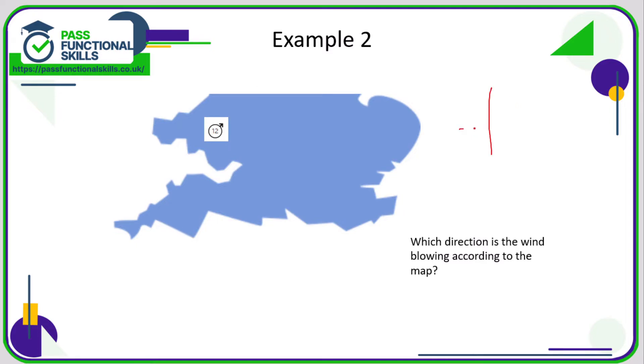Let's just think of our compass. We've got never eat shredded wheat or naughty elephant squirts water. This bearing here is cutting exactly between the north and the east. I think we need to assume that it's exactly halfway between north and east, so therefore that is a north-easterly direction.